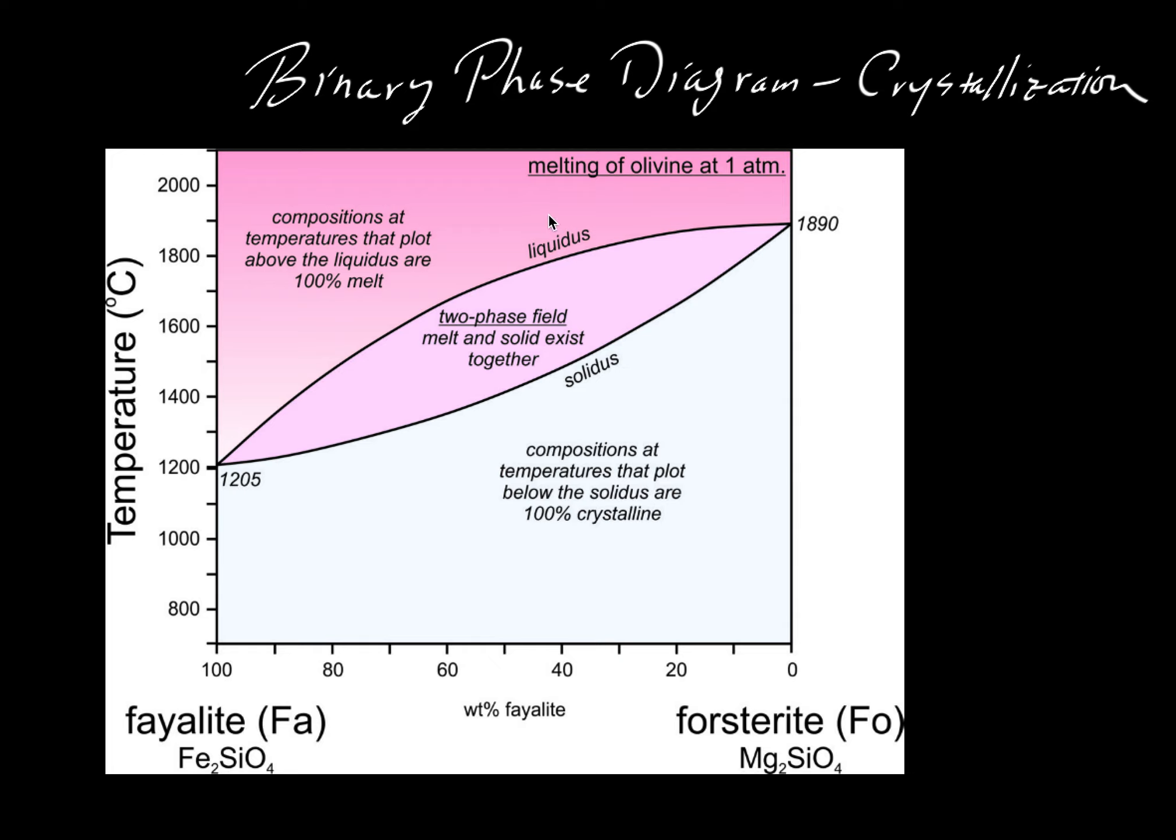In another video we used this diagram by Dexter Perkins in his online mineralogy textbook to explain melting in the binary system fayalite plus forsterite. Here we're going to look at a quantitative example of crystallization.